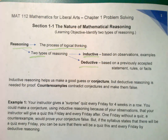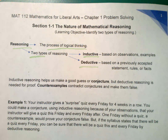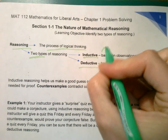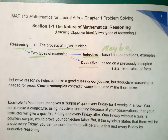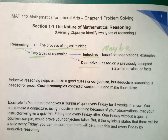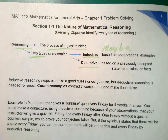Inductive is based on observations and examples — we saw some stuff, it happened that way, so maybe it's going to happen again that way. It's kind of a maybe. If there's a possibility that something else may occur, then it's inductive. But if there's no chance that something else will occur, then it's deductive, because these are facts.